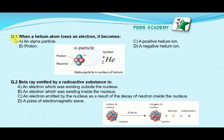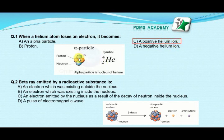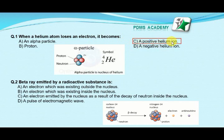Our next MCQ is: when a helium atom loses an electron, it becomes — option A: an alpha particle, option B: proton, option C: positive helium ion, option D: a negative helium ion. Our correct answer is C, positive helium ion. When an alpha particle is formed, the helium atom loses two electrons and the nucleus of helium is called an alpha particle, carrying a +2 charge. But when helium loses only one electron, it becomes a positive helium ion.